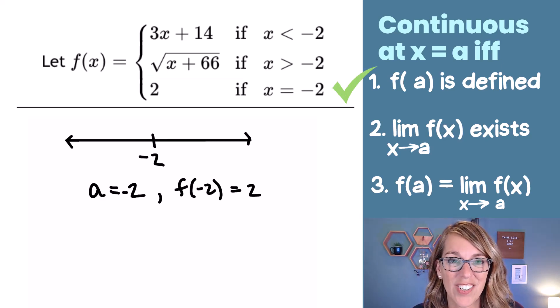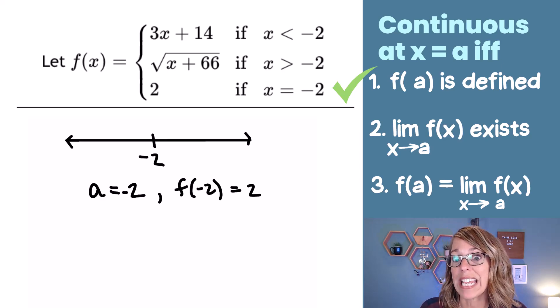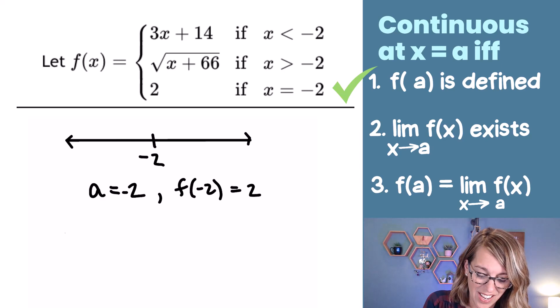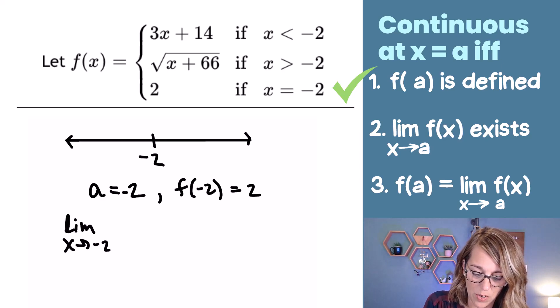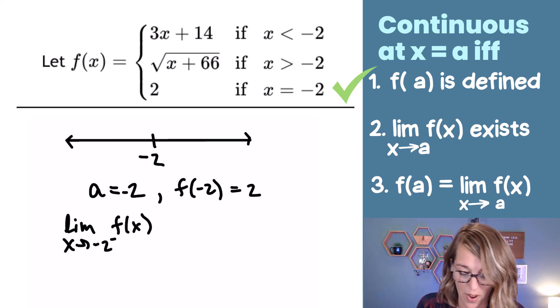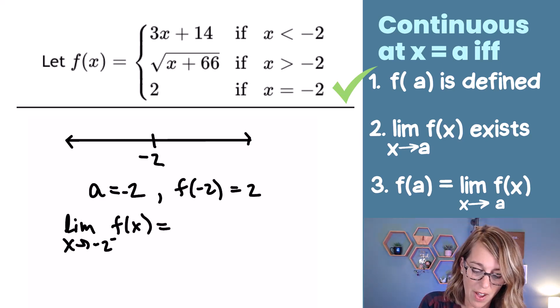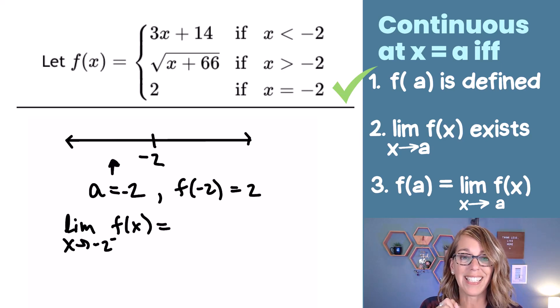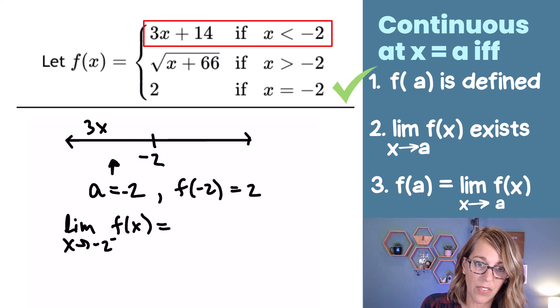Now let's check that second condition. I want to know if the limit as x approaches a, so x approaches negative 2, if that exists. So that means that I need the limit as I'm approaching negative 2 from the left to be the same as the limit from the right. Well, if I'm on the left side of negative 2, I'm over here, less than negative 2, I'm going to use the formula 3x plus 14.